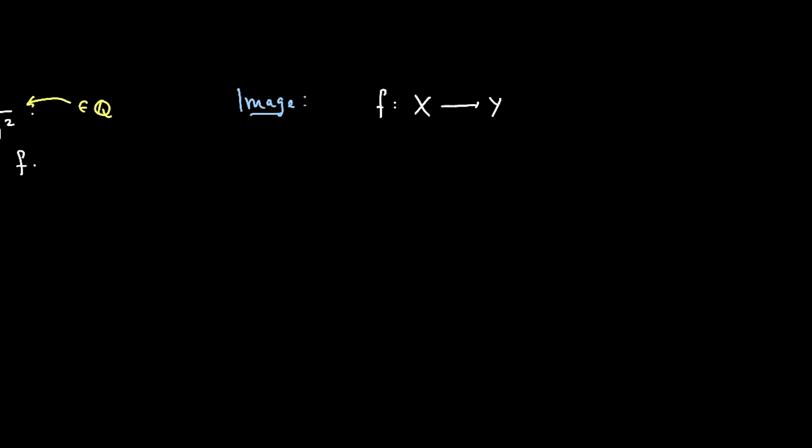If I have an arbitrary function from some set X to some set Y, and remember X here is the domain, that's the set of all possible inputs. And Y here is the codomain. That's just some set that contains the outputs of f.